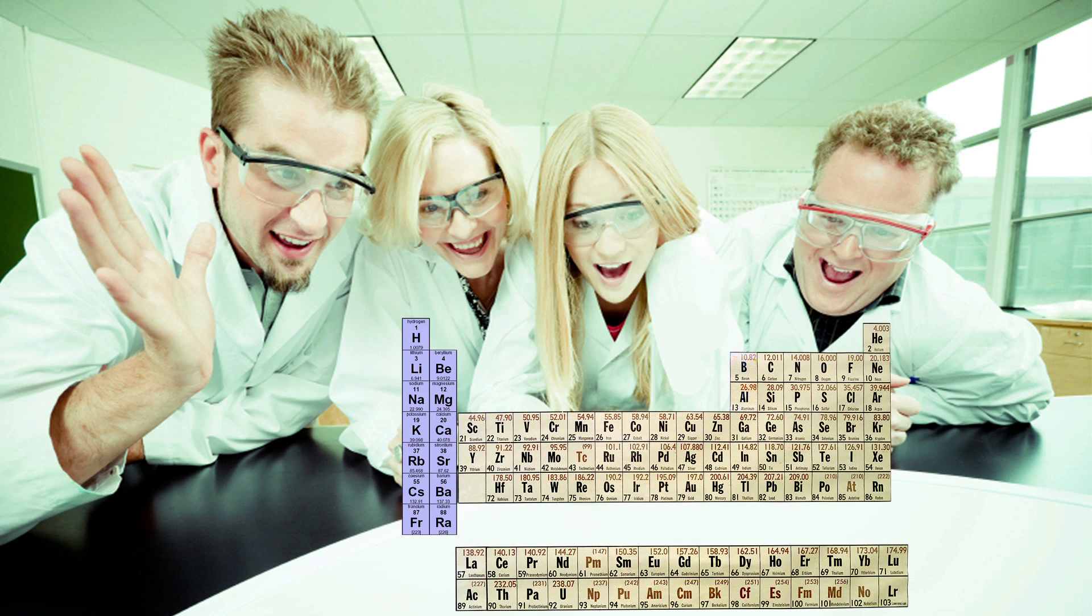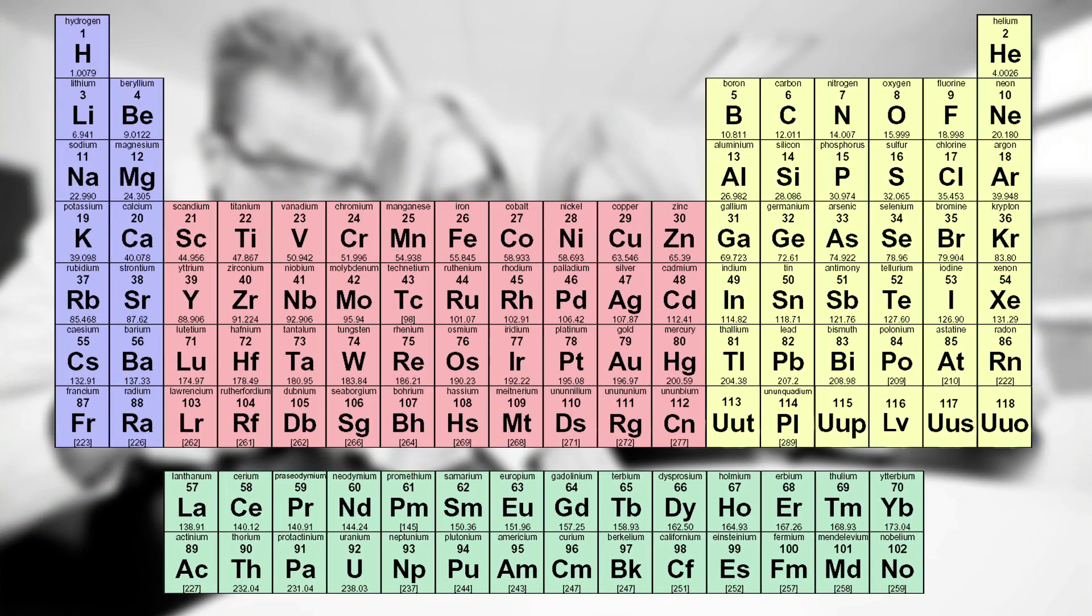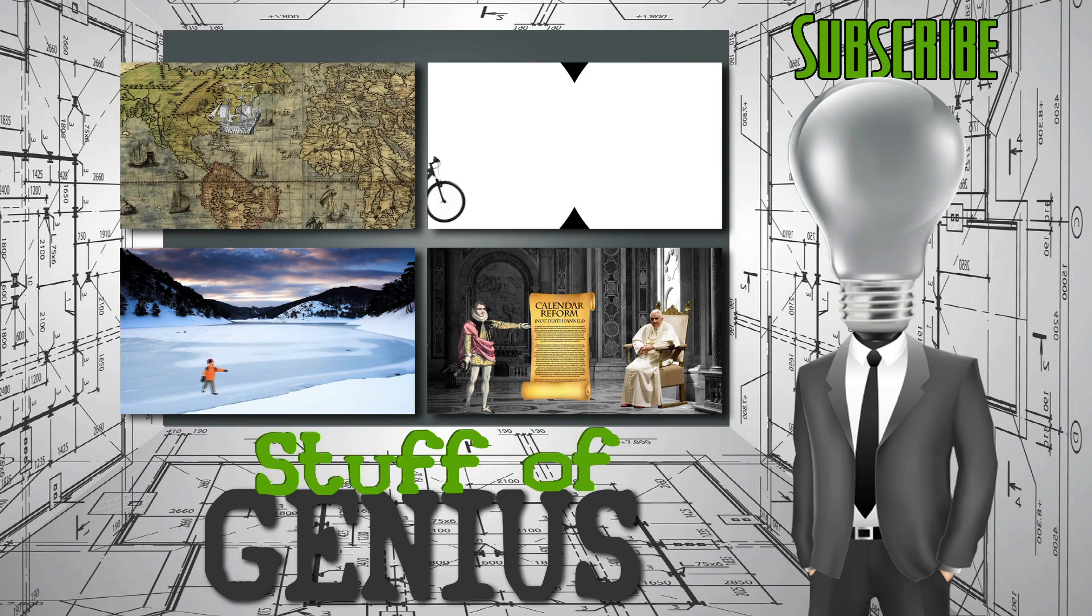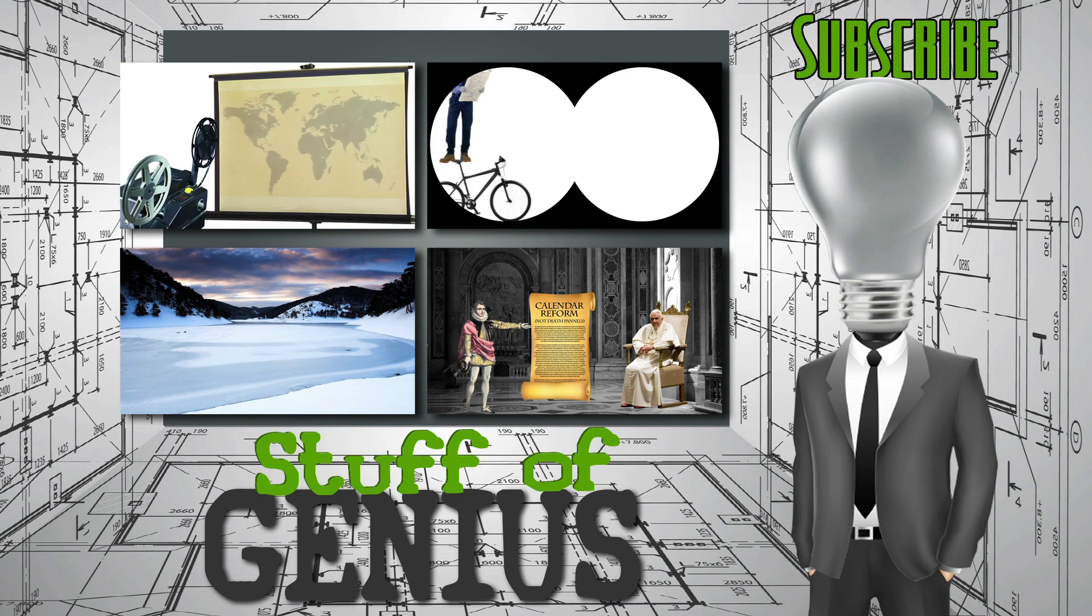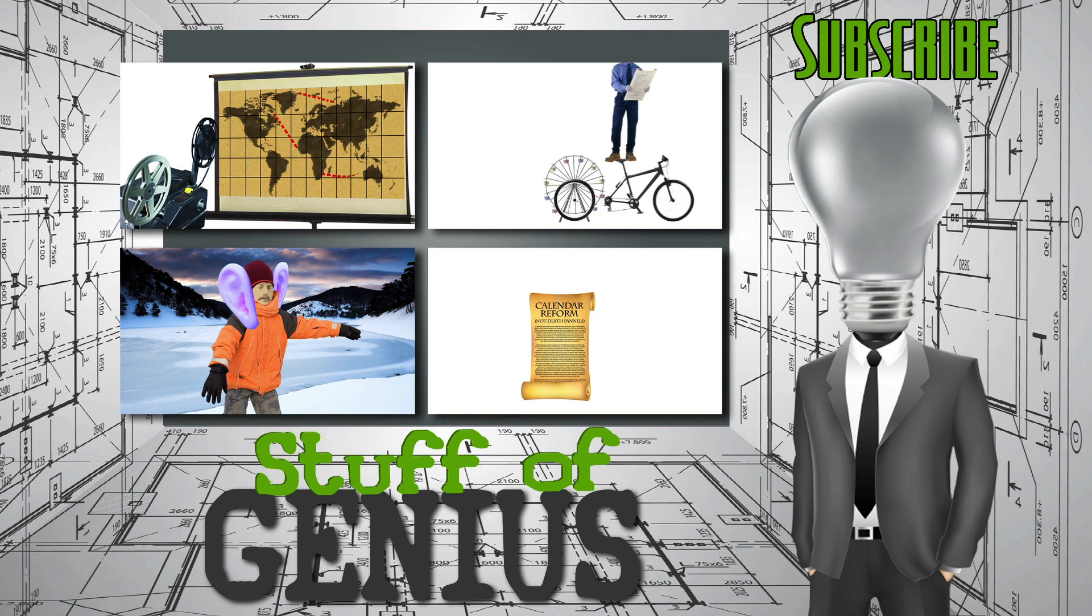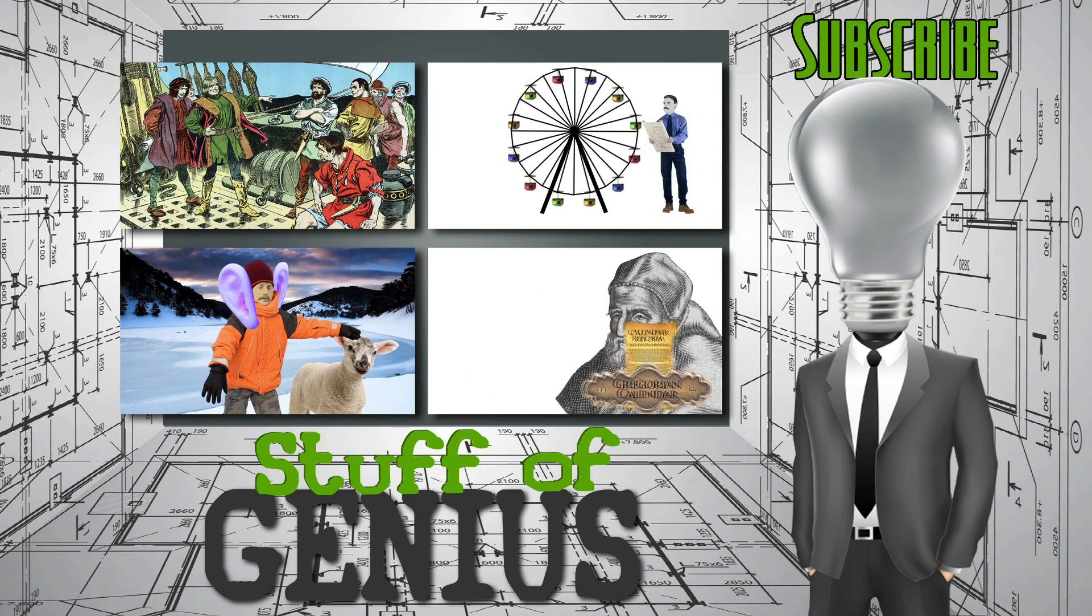They modified, corrected, and added to his work over time. Today, the periodic table has 118 elements, and chemists across the planet are still working to confirm more.